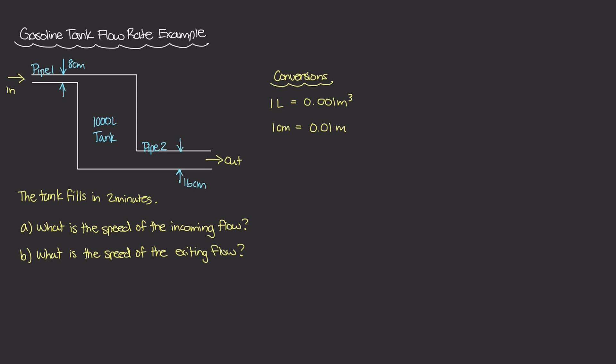The problem asks two questions. Question A is: what is the speed of the incoming flow — the velocity of the fluid entering pipe one? The second question is: what is the speed of the exiting flow — the velocity of the fluid leaving pipe two? So we need to find the velocity of the gasoline both entering and exiting the pipes.